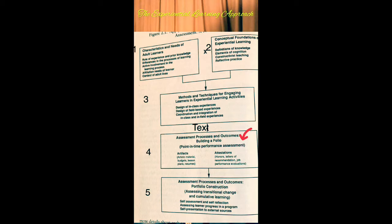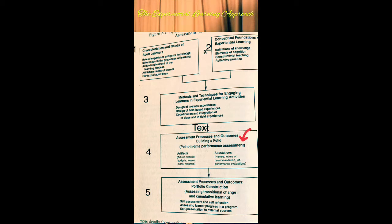Box four covers assessment processes and outcomes — building a portfolio and point-in-time performance assessment. This consists of two parts: first, the artifacts, which include artistic materials, budgets, lesson plans, and resumes; and second, the attestation, which includes letters of recommendation and job performance evaluations.